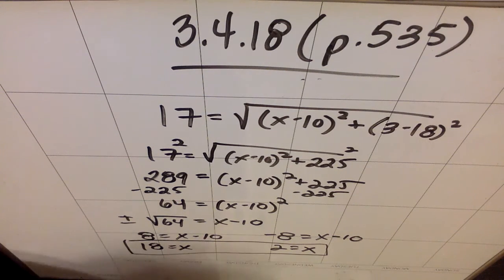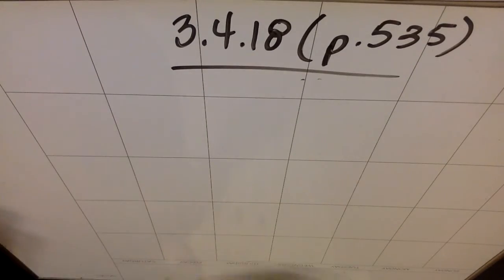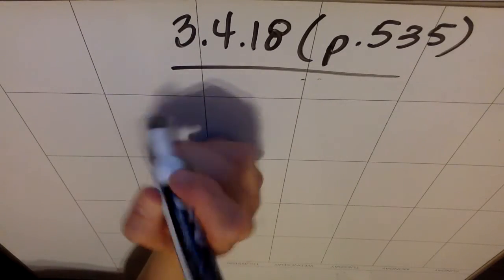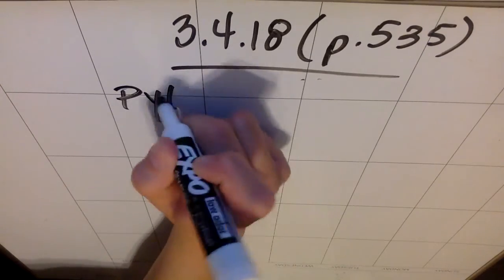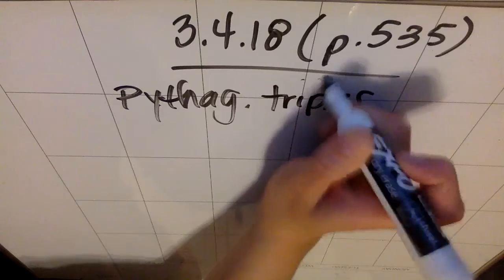Another clever way to do this, if you have some background knowledge but didn't want to do the distance formula, is to use your Pythagorean triples. So, just to show you a cool other way to do this, remember that we know some Pythagorean triples.